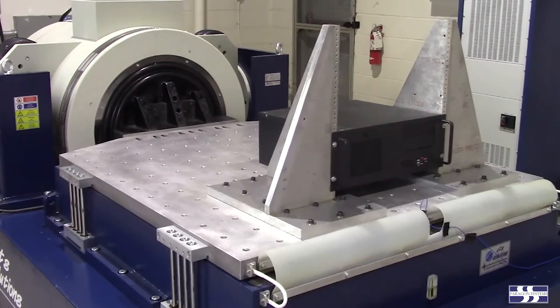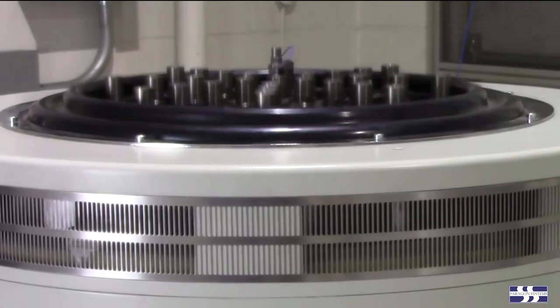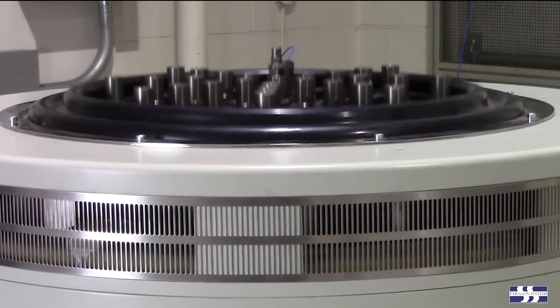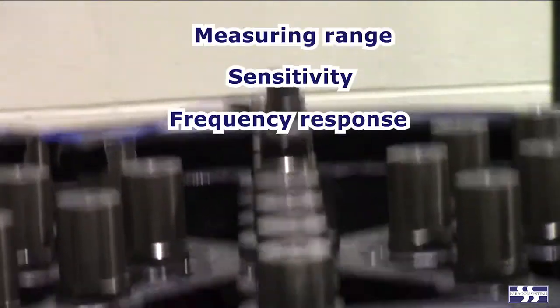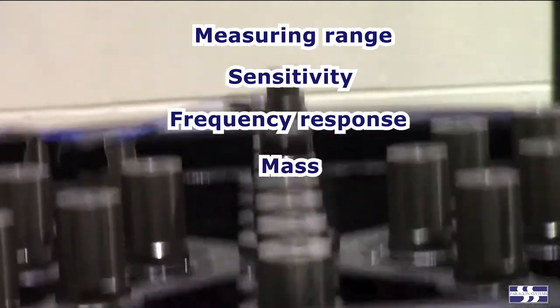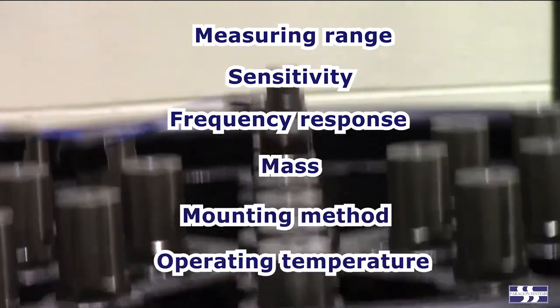Some of the more significant accelerometer characteristics that need to be considered when selecting an accelerometer for a vibration test are measuring range, sensitivity, frequency response, mass, mounting method, and operating temperature.